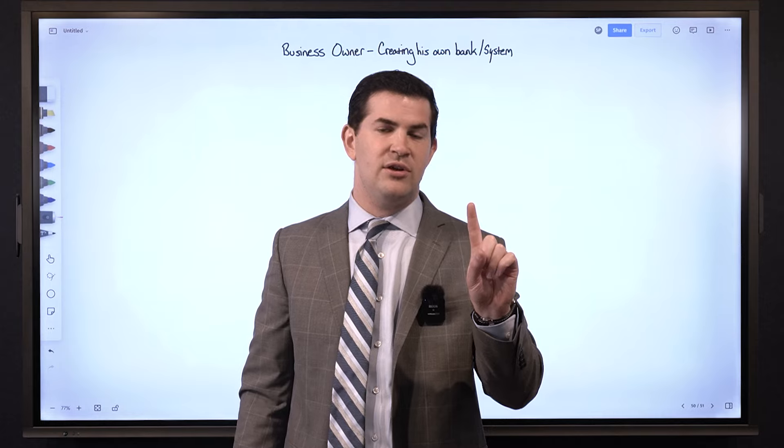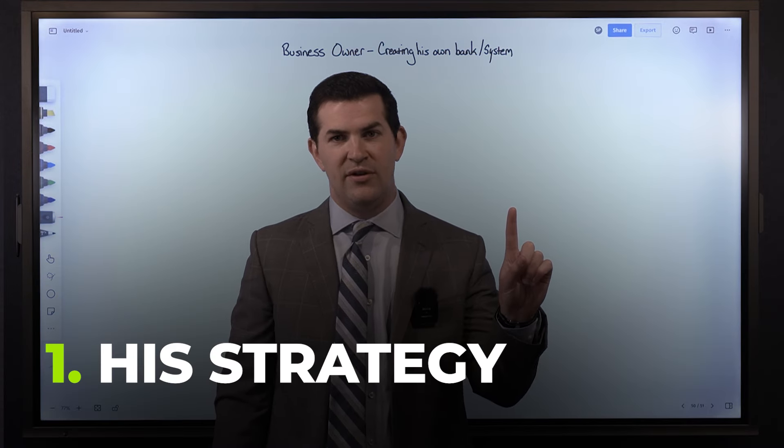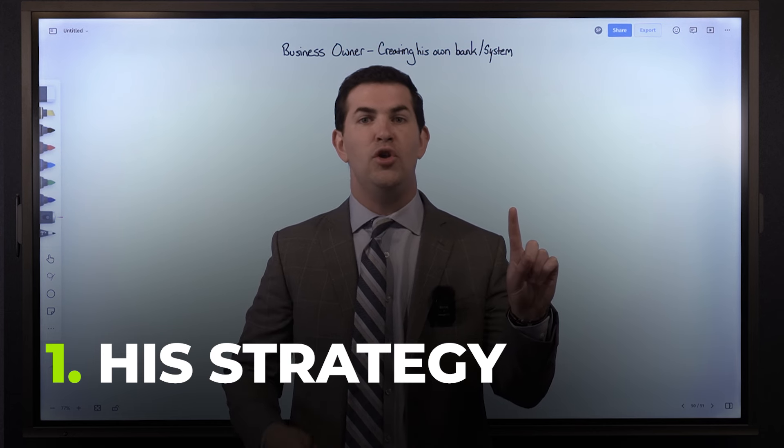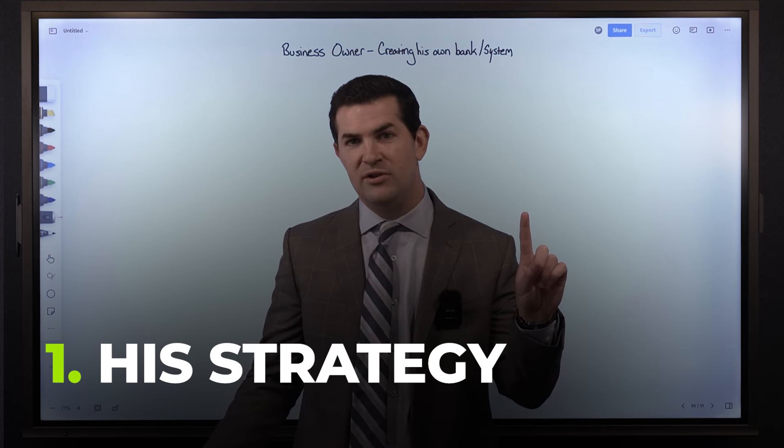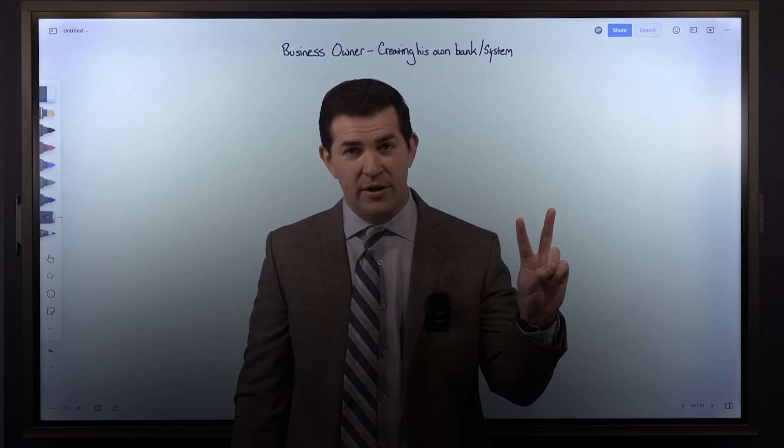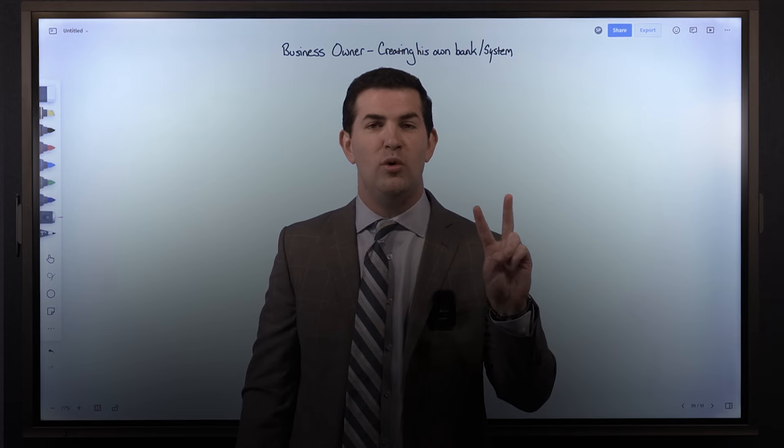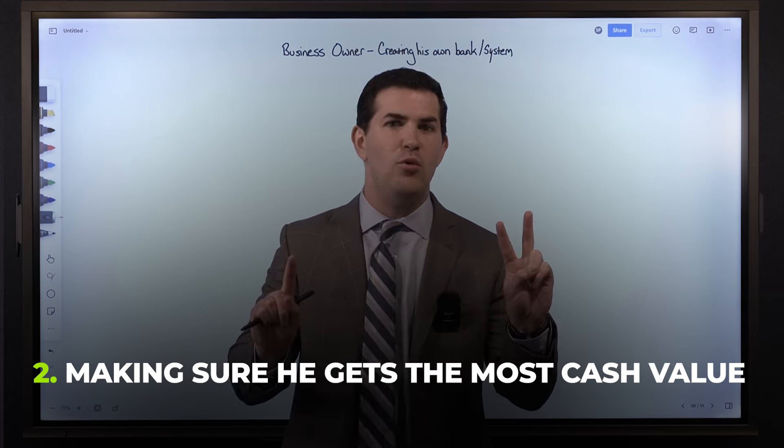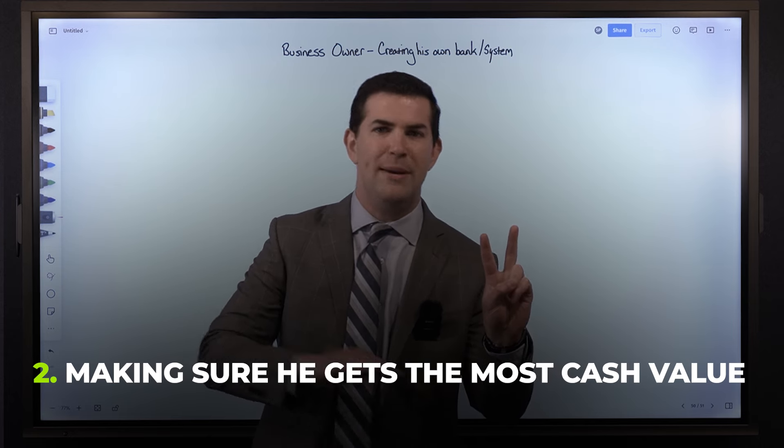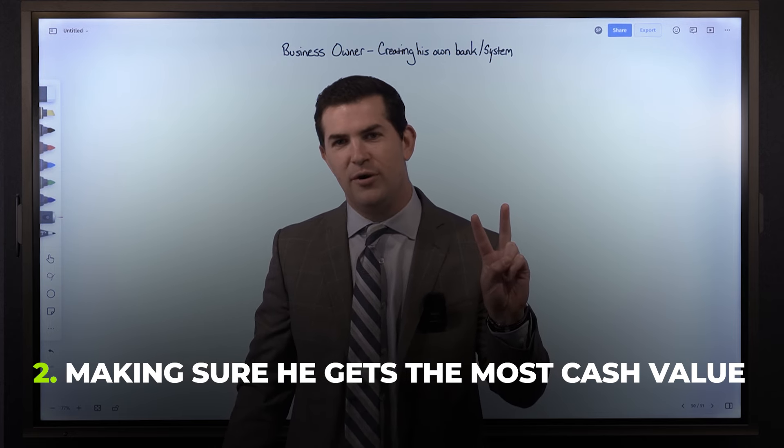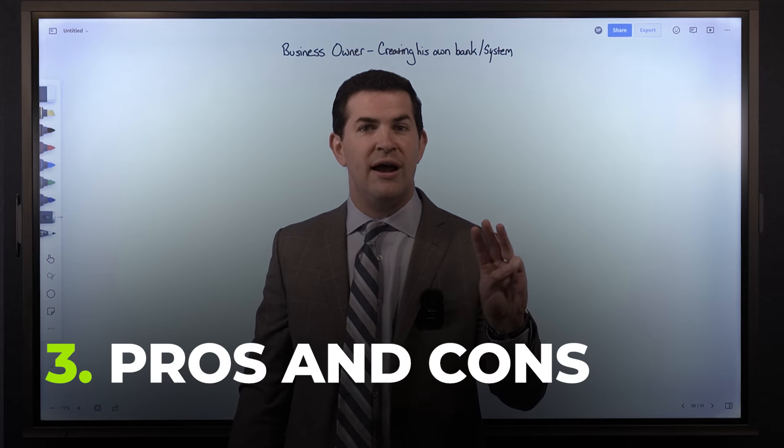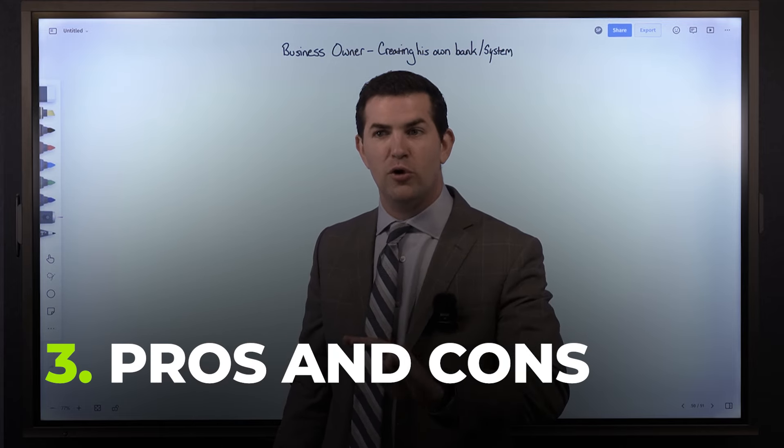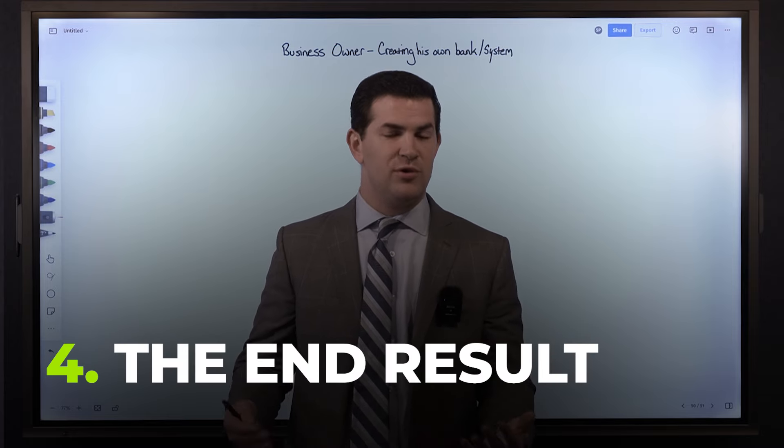First we'll discuss his strategy - specifically how old he is, how much he's going to pay into the policy and how he plans on using it for his business. Second, we'll talk about the most important thing which is making sure he gets the most cash value beginning day one. Then third, we'll talk about the pros and cons of whole life insurance and specifically using it for your business. And fourth, we'll look at the end result.